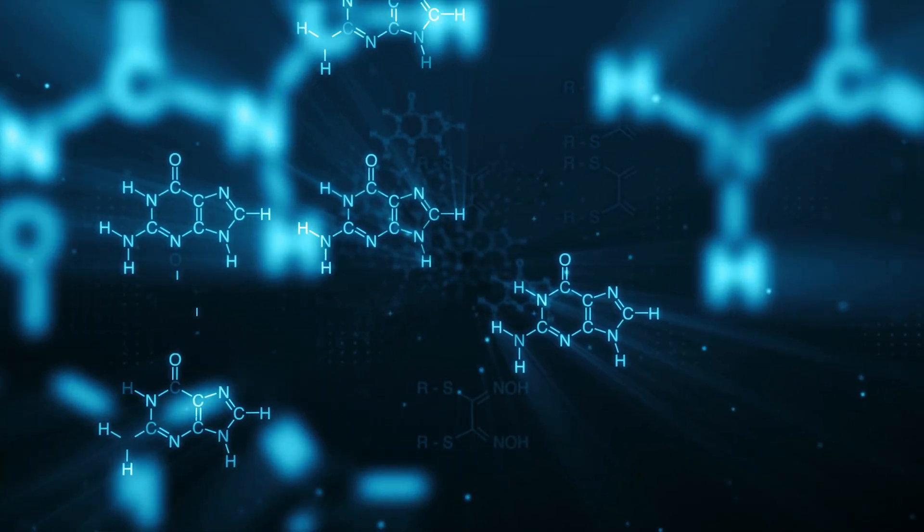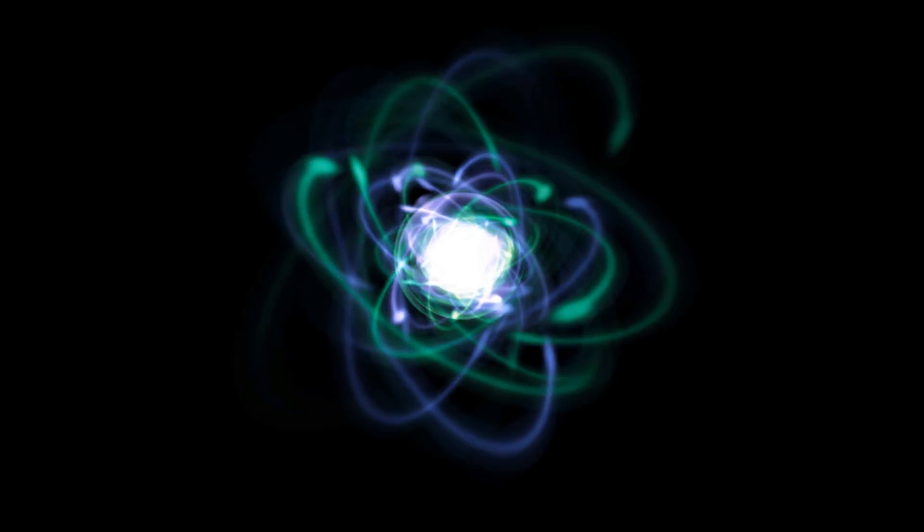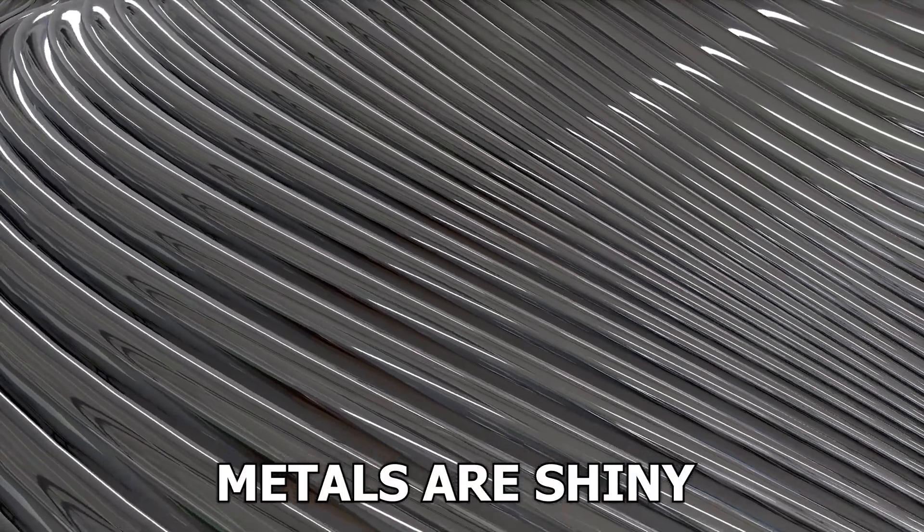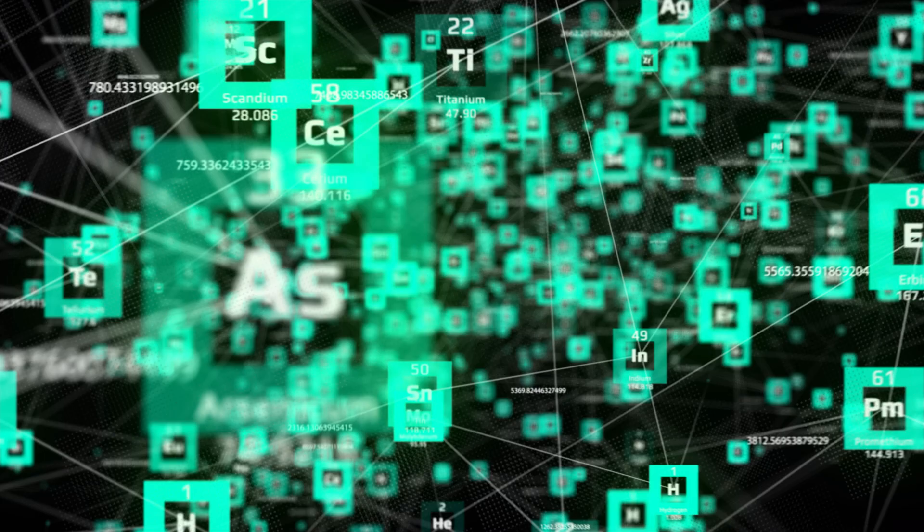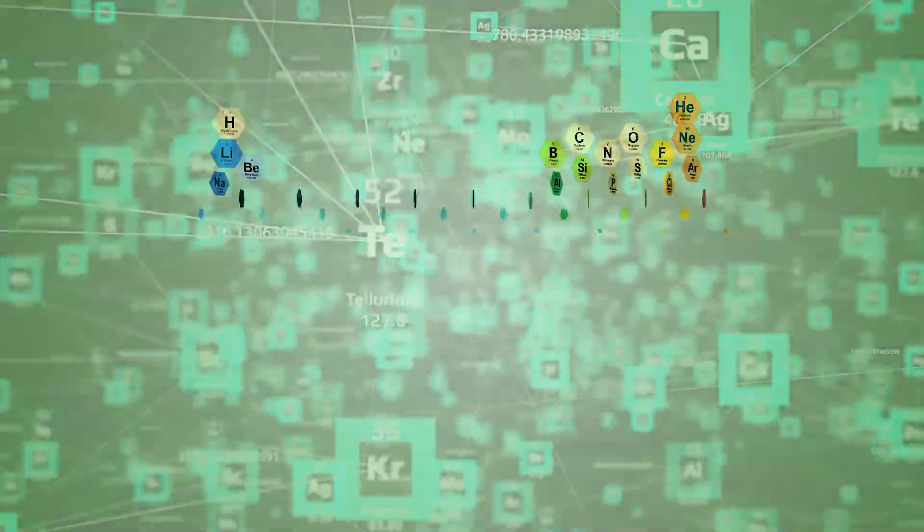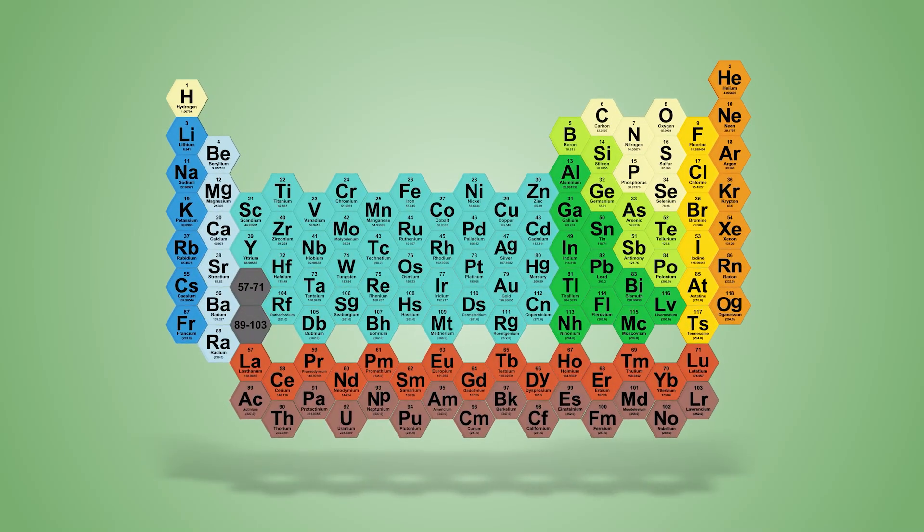Have you ever wondered why some elements are more reactive than others, or why some metals are shiny and others are dull? The answers to these questions lie in the fascinating world of the periodic table. The periodic table is a chart that organizes all known elements based on their properties.